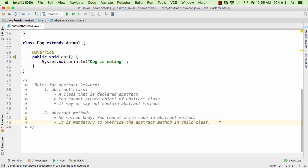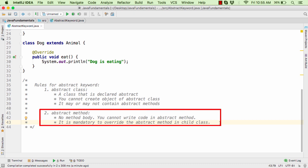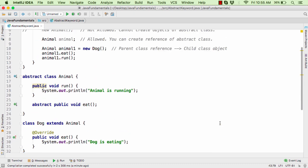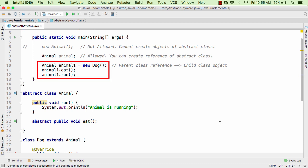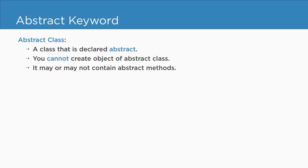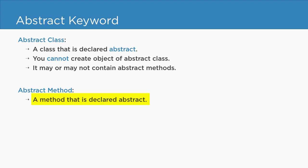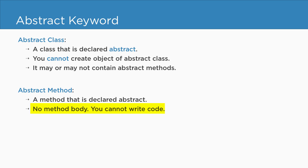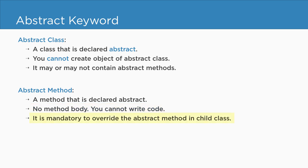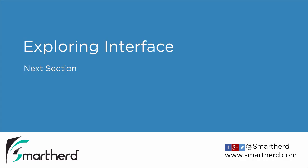That's all for this video. We checked out abstract methods and how to create the object and call the functions that belong to the abstract class. To summarize: the method which is declared abstract is known as the abstract method. The abstract method contains no method body — you cannot write any code within it. It is mandatory to override the abstract method in the child class. Coming up next, in the next section we will check out interfaces in Java. Take care.